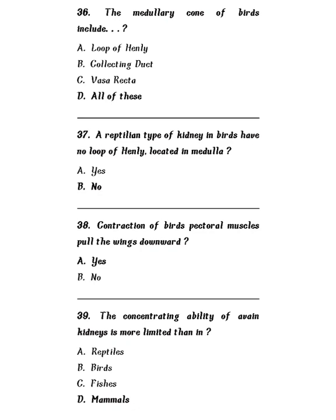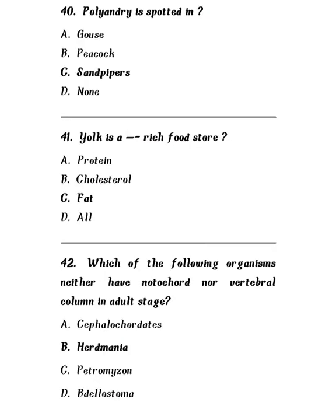Question 39: The concentrating ability of avian kidneys is more limited than in reptiles, birds, fishes, or mammals? The concentrating ability of avian kidneys is more limited than in mammals. Question 40: Polyandry is spotted in gauze, peacock, sandpipers, or none of the above? The correct answer is sandpipers. Polyandry is spotted in sandpipers.